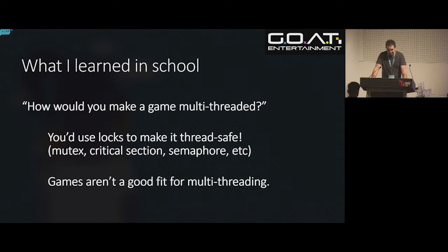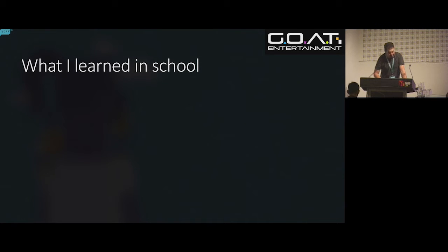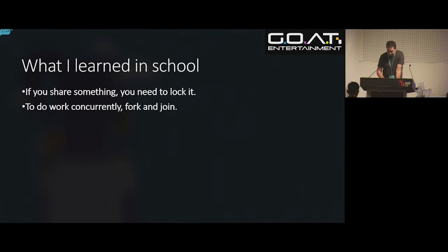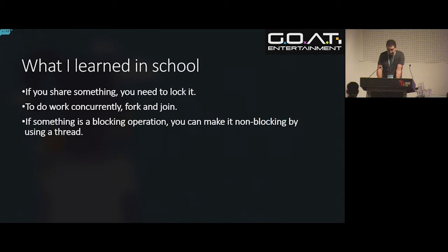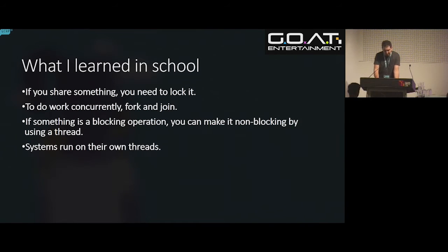The other answer is just an excuse that games aren't a good fit for multi-threading. You don't hear that these days much anymore because you kind of have to use multi-threading if you're making a console game. Both of these answers are bullshit. What I learned in school: if you've got shared data, you lock it. For concurrent work, you use fork-and-join — spawn a new thread, do parallel work, wait for it. You can wrap blocking operations in threads or put systems on their own thread.